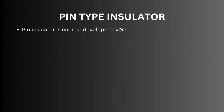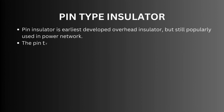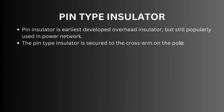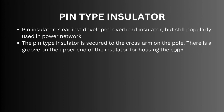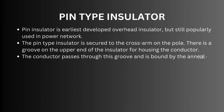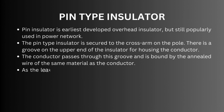Pin insulator is the earliest developed overhead insulator but is still popularly used in power networks. The pin type insulator is secured to the cross arm on the pole. There is a groove on the upper end of the insulator for housing the conductor. The conductor passes through this groove and is bound by annealed wire of the same material as the conductor.